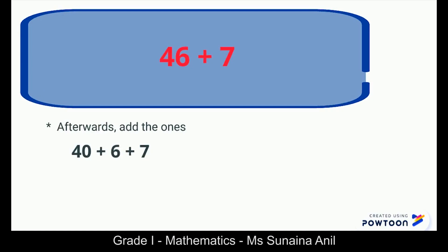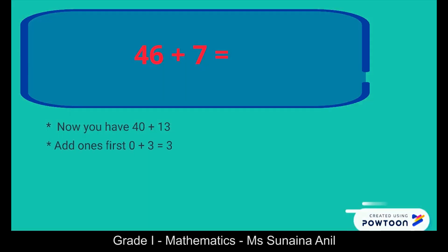Afterwards add the ones. So 6 plus 7 — what is the answer? Yes, absolutely right, it's 13. Now we have 40 plus 13. Add 1 first. 0 plus 3 is 3.